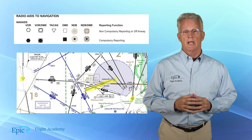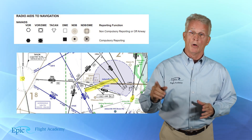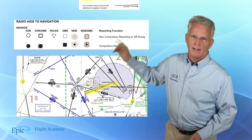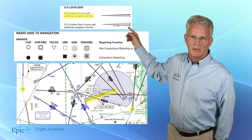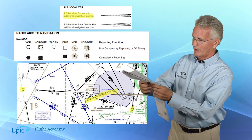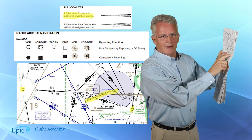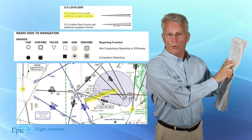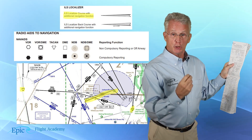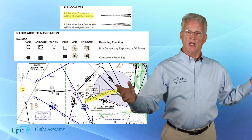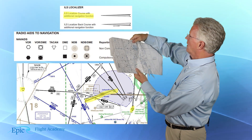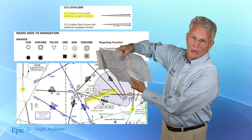If a nav aid is blacked in, that means it is a compulsory reporting point when you are using that aid as part of your en route structure for cross-country navigation. And there's that feathered arrow from the ILS localizer! The ILS localizer course is depicted on the low en route chart when it has an additional navigational function, such as identifying a fix — in this case, Libby on Victor 198.